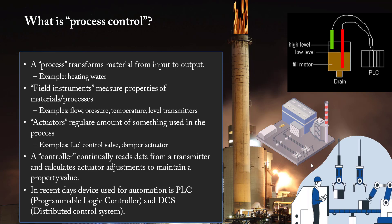These are all sort of things that need to be measured in process environment. So actuator actually regulates the amount of something used in the process. Like that can be a control valve or it can be a damper actuator. So actuator is the final control element. For example, how much corrective action is needed would be ensured by control valve.